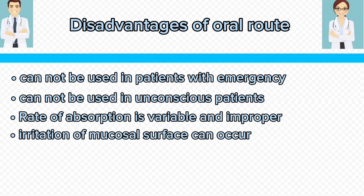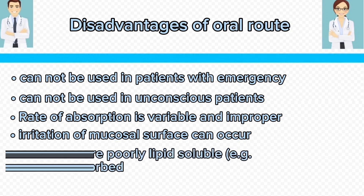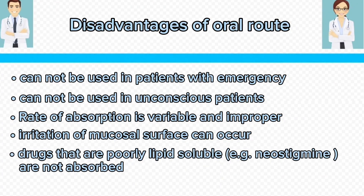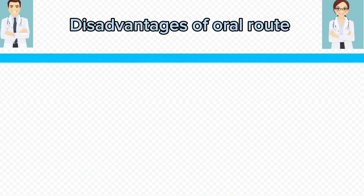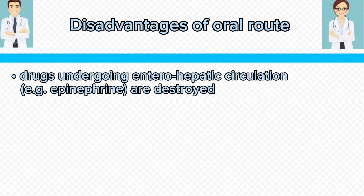The oral route can cause irritation of the mucosal surface. Drugs that are overly lipid soluble, like neostigmine, which is a nervous system drug, are not absorbed via the oral route. Drugs undergoing enterohepatic circulation, such as epinephrine, are destroyed because of the enterohepatic circulation.